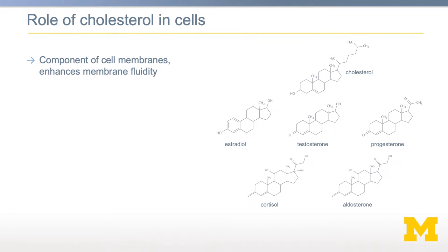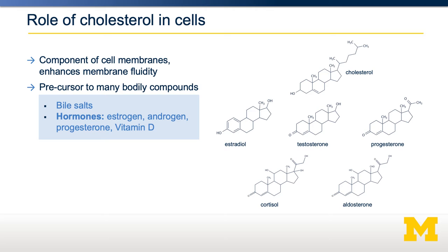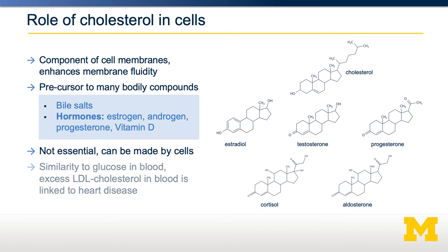Cholesterol has several important roles in our bodies. Cholesterol sometimes gets a bad reputation, but cholesterol is absolutely essential for every cell in our body. It's a component of cell membranes and enhances cellular membrane fluidity. Cholesterol is also a precursor to several important body compounds, such as bile salts, and several hormones including testosterone, estrogen, and even vitamin D. Cholesterol is not an essential nutrient — we do not need to eat it, because it can be made by almost every cell in the body. However, excess levels of cholesterol in our blood is linked to heart disease, analogous to how excess levels of glucose in our blood is linked to diabetes.